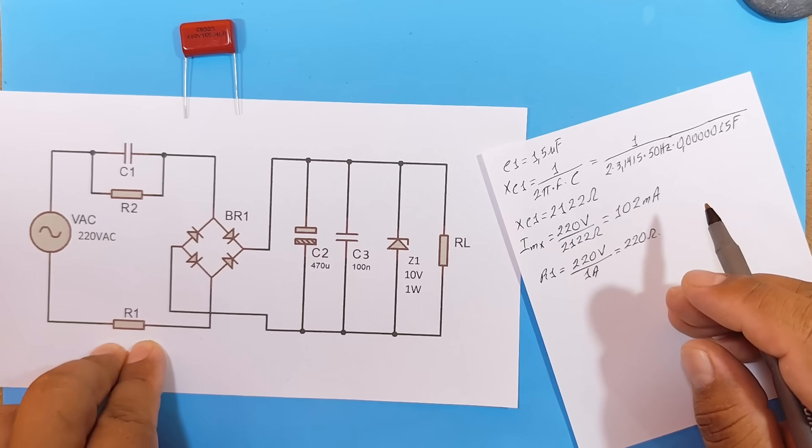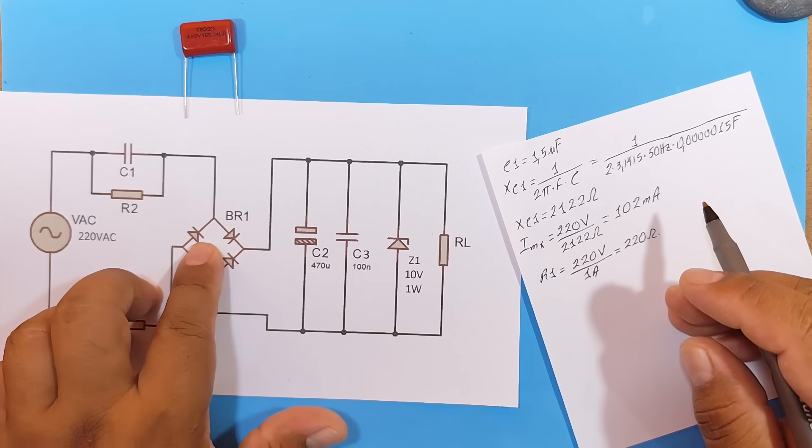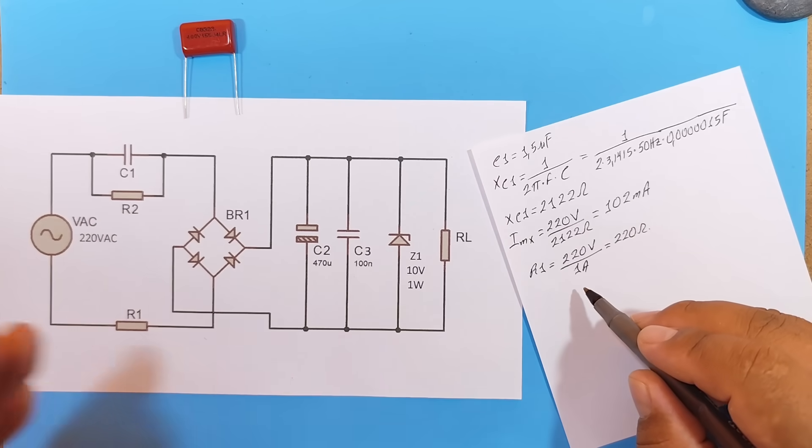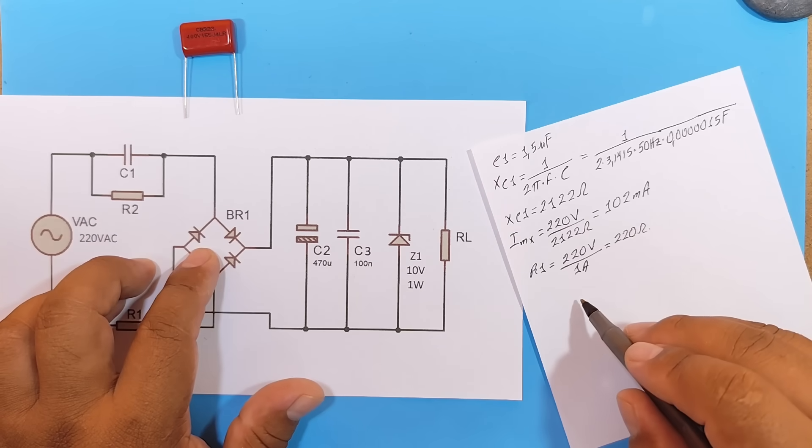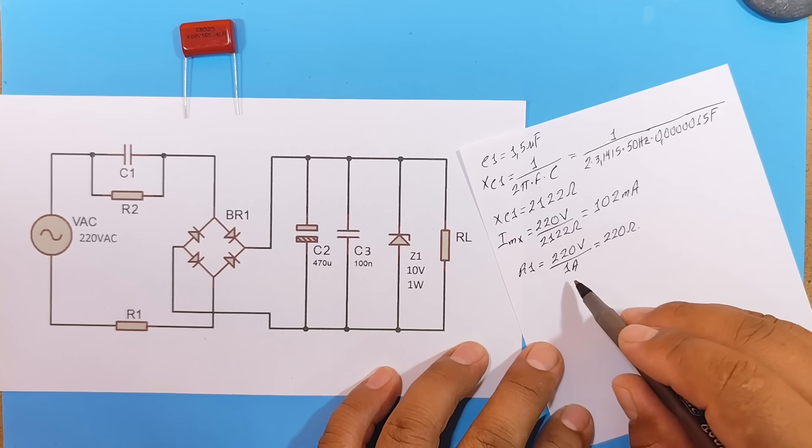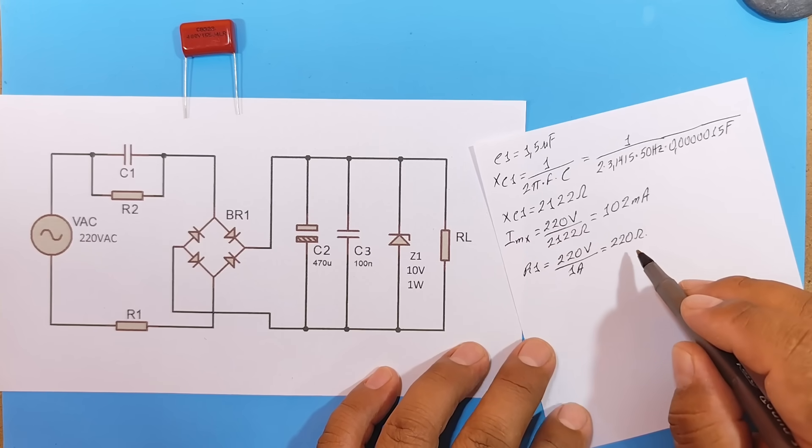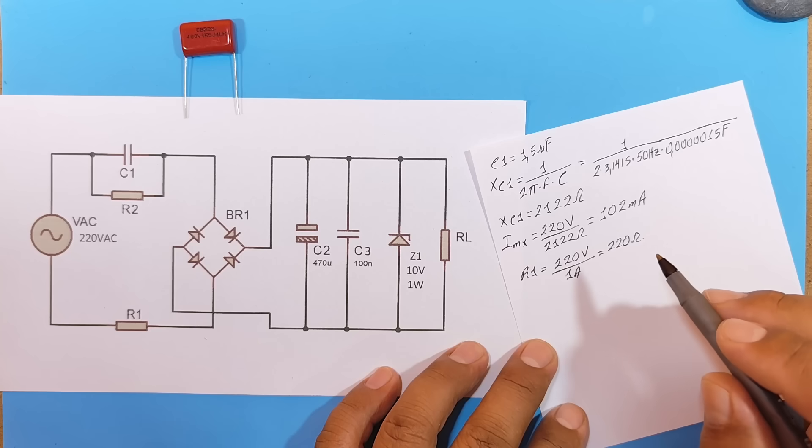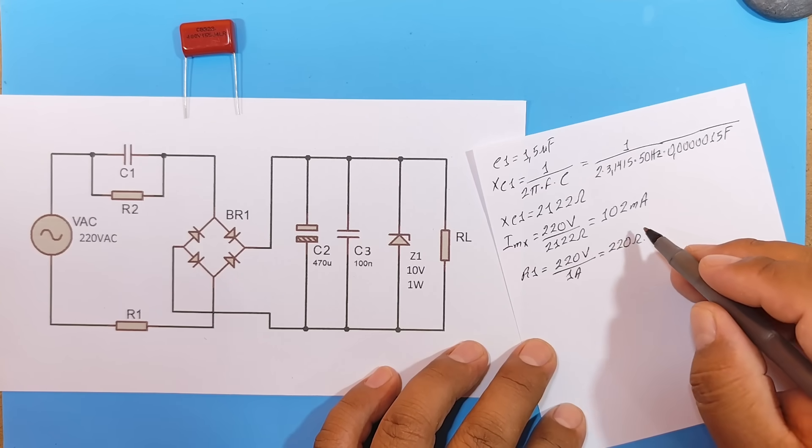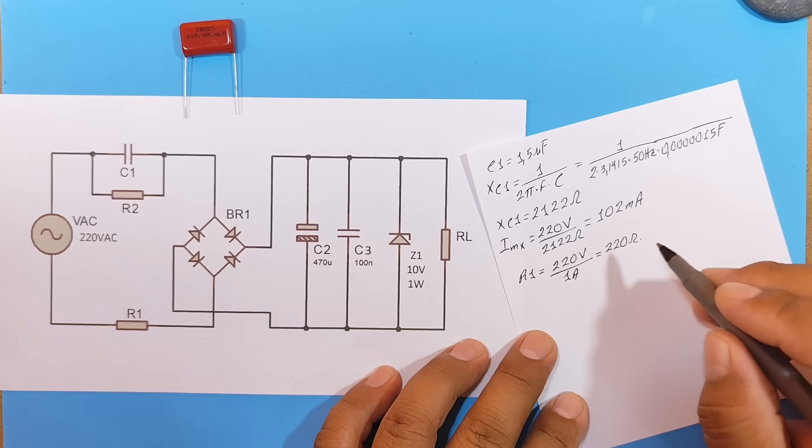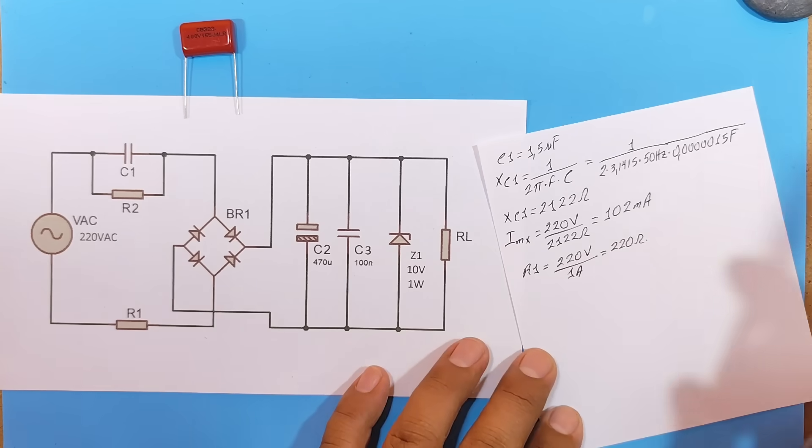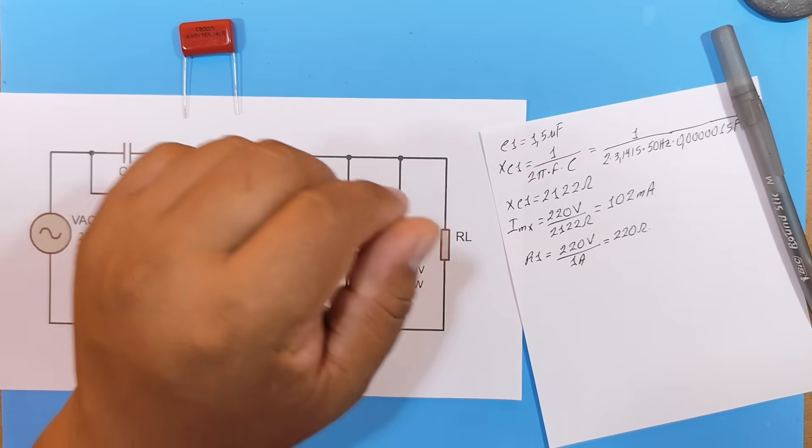In this case, I am setting 1 ampere, which would be the maximum a diode bridge can handle. You can increase or decrease the value. You can maintain the 220 ohm resistor, or vary it. You can increase its value to 330 ohms or 470 ohms, or you can reduce it to 100 ohms or 47 ohms. This will influence the size of the resistor.